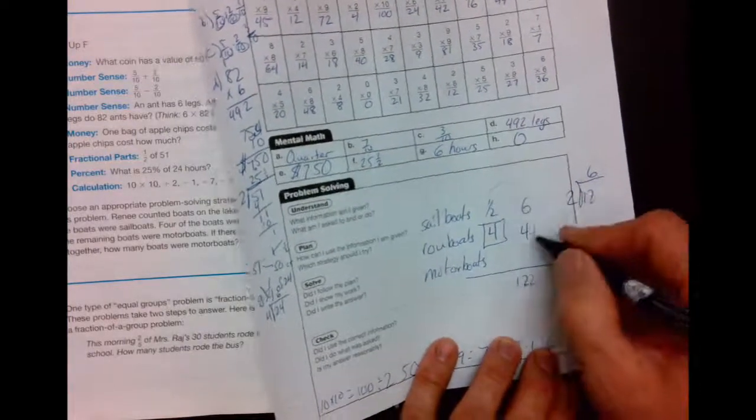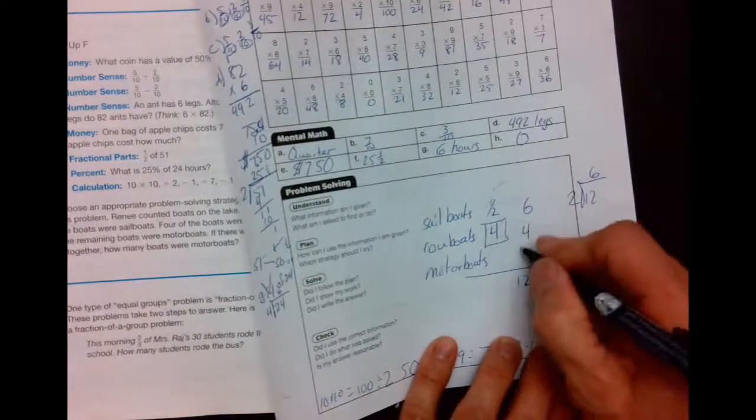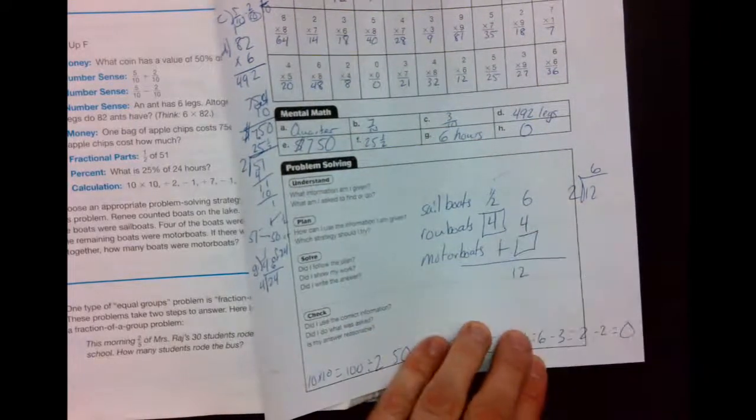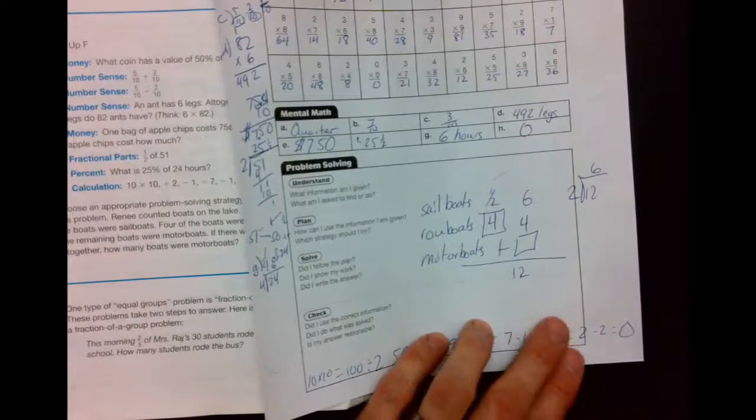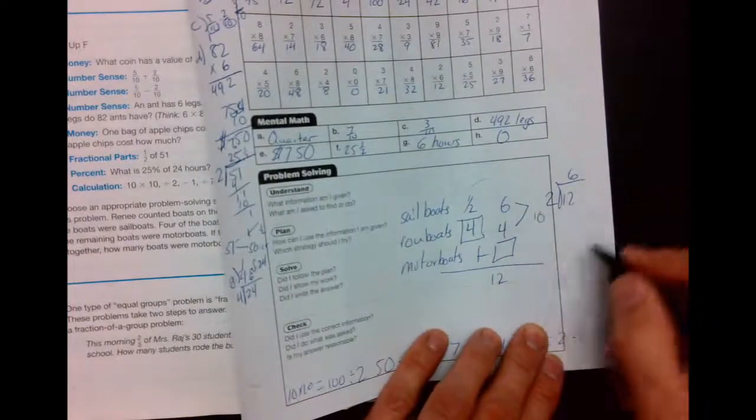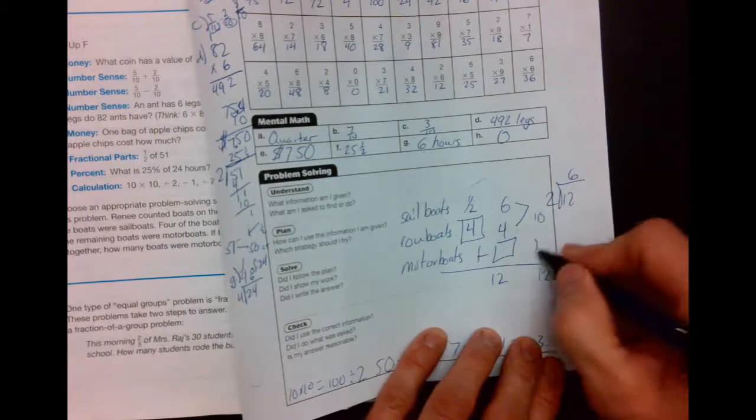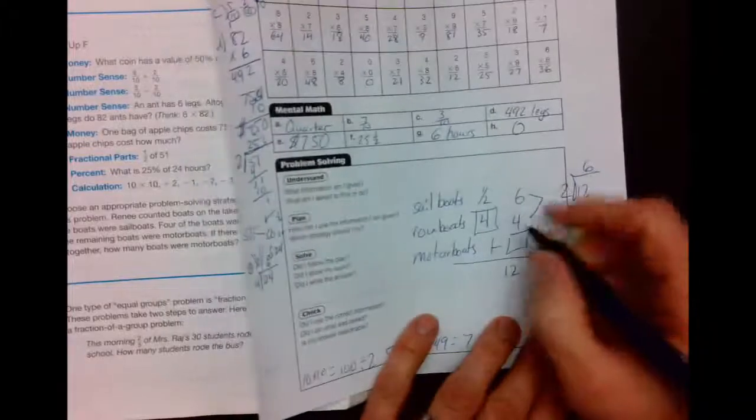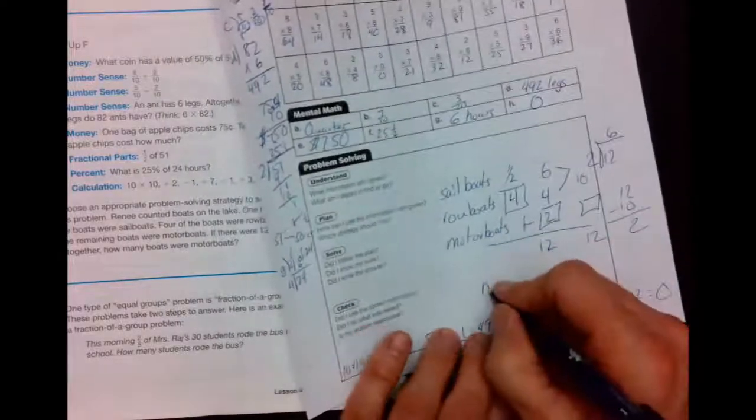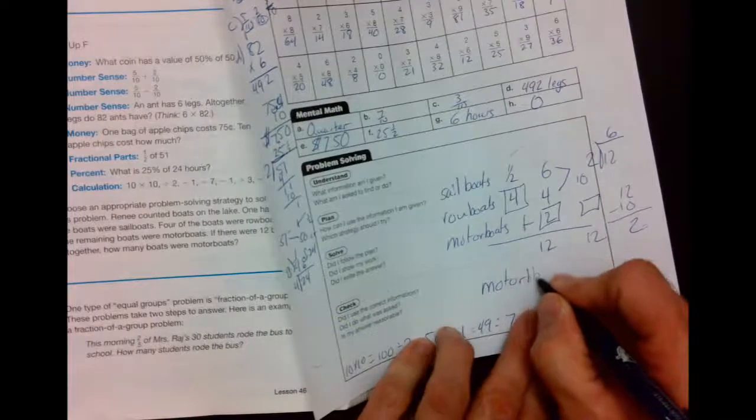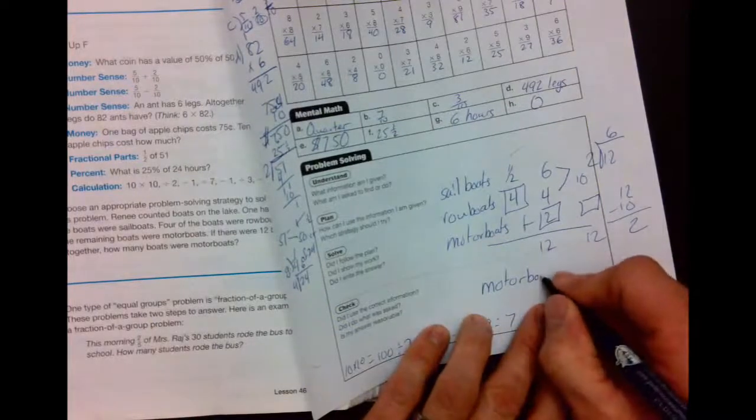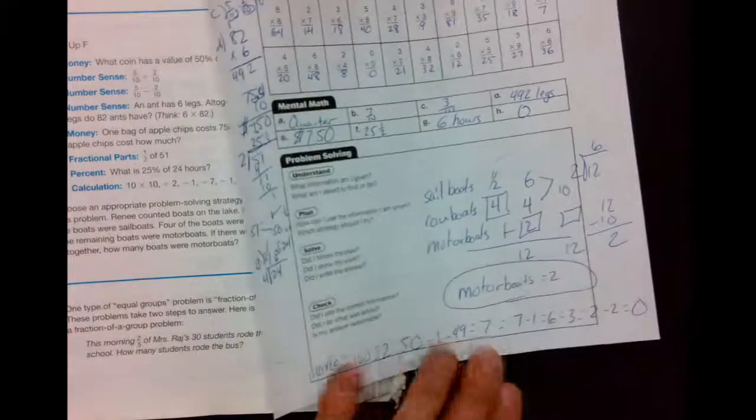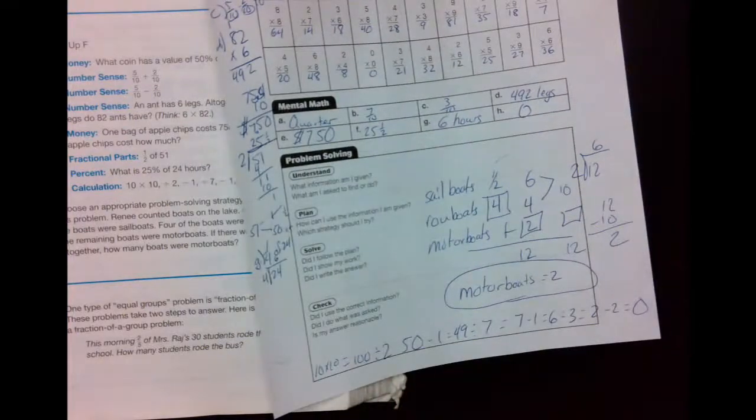So we got 6 sailboats, 4 motorboats, 4 rowboats, and some motorboats equals 12. Looks like a missing add-in problem, right? Whenever we have a missing add-in problem, we're going to subtract. But let's add these guys up first. We get 10. Now you got the missing add-in. Subtract. 12 minus 10 equals 2. How many motorboats? 2. And then I always like to write mine so I can box it up.